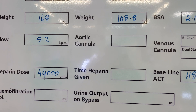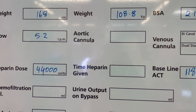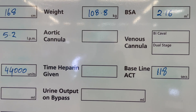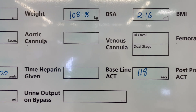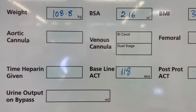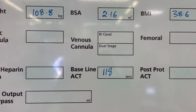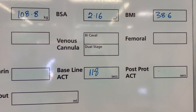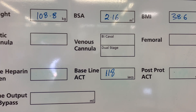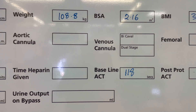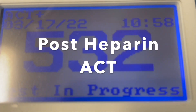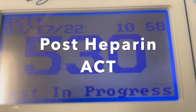We have to heparinize the patient at 4 mg per kilogram. We then wait three minutes for the heparin to circulate throughout the body and perform an ACT. The protocol requires 480 seconds — after 200 seconds we can use the suckers, but to go on bypass we need to reach 480 seconds.